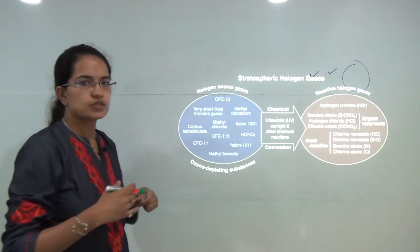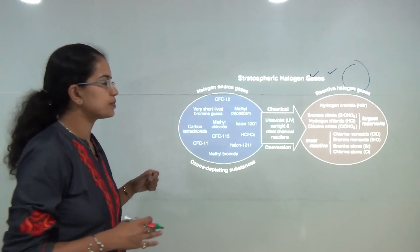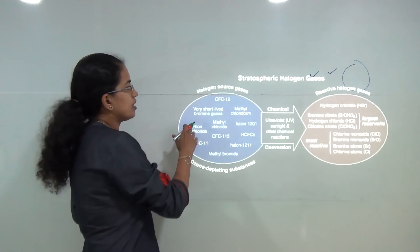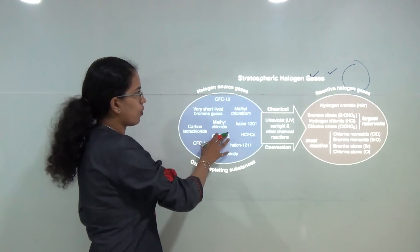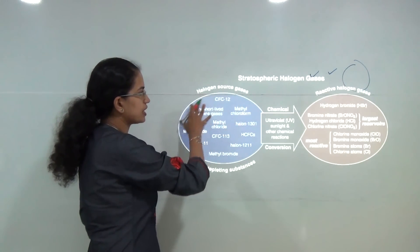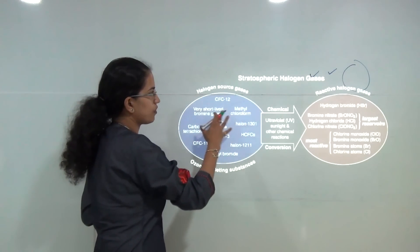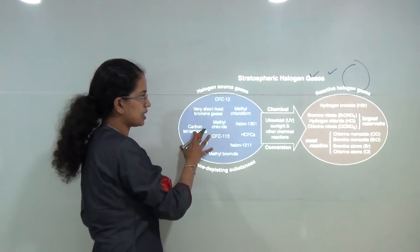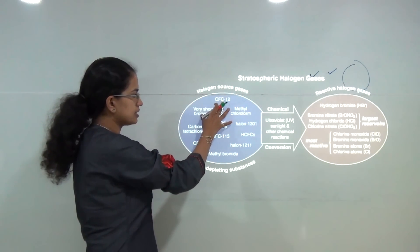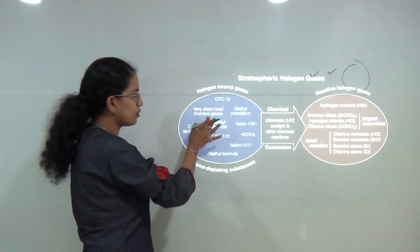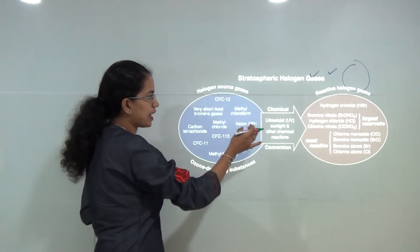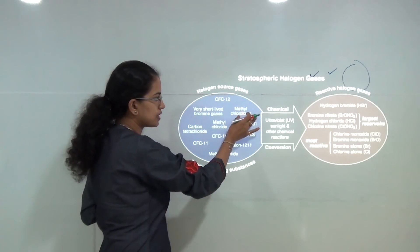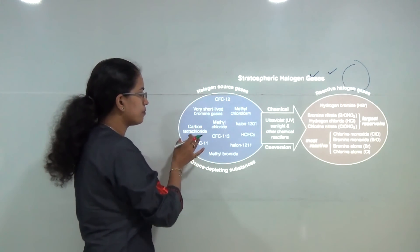The most important of these was the Montreal Protocol. It sought to identify the various sources of halogen-based gases: CFCs, bromine, methyl chloride, halons, and methyl chloroform.